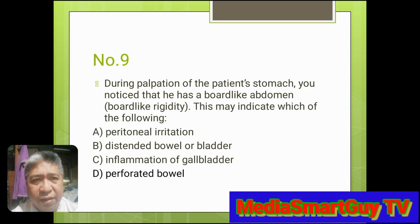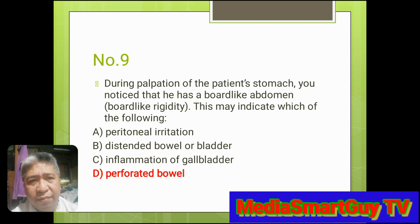Number 9. During palpation of the patient's abdomen, you noticed that he has a board-like abdomen or board-like rigidity. This may indicate which of the following? A. Peritoneal irritation. B. Distended bowel or bladder. C. Inflammation of the gallbladder. D. Perforated bowel. Answer: D. Perforated bowel.